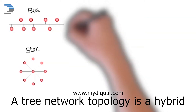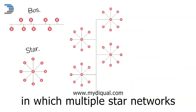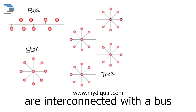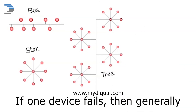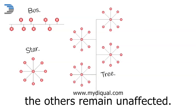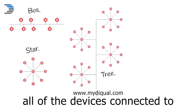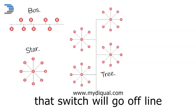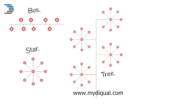A tree network topology is a hybrid in which multiple star networks are interconnected with a bus network. If one device fails, then generally the others remain unaffected. If a single switch fails, then all of the devices connected to that switch will go offline, but the other star networks will be unaffected.